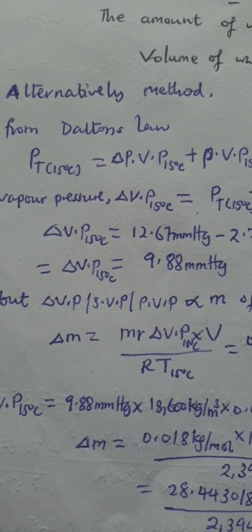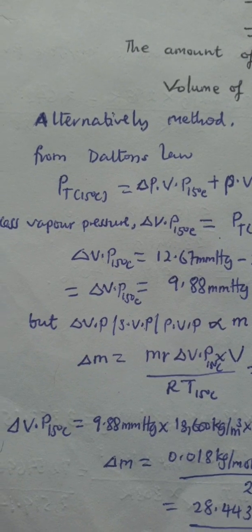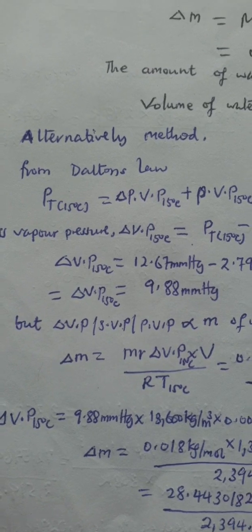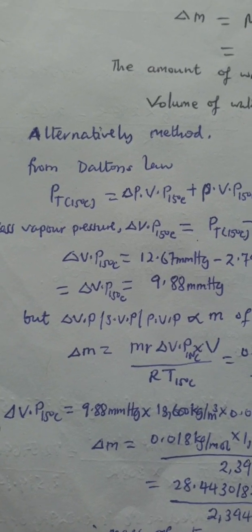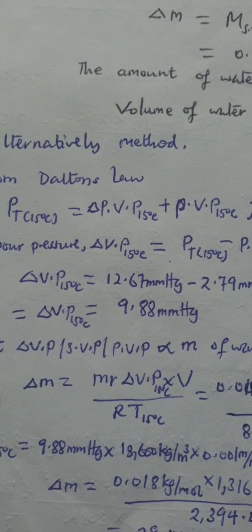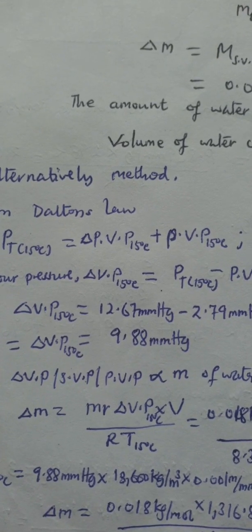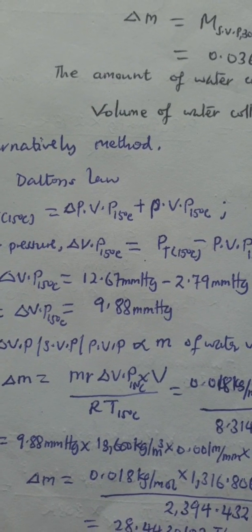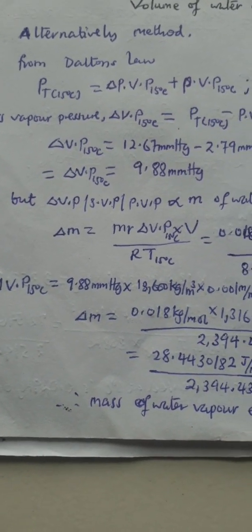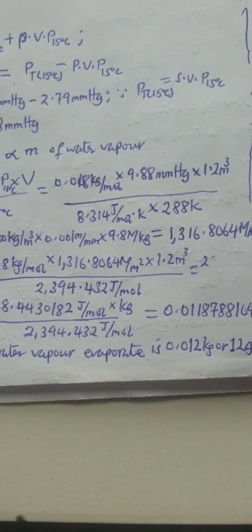Now we want to apply the alternative method using Dalton's law. The total partial pressure at 15 degrees Celsius equals the sum of individual pressures: the excess vapor pressure that evaporates until saturation plus the vapor pressure present before the beaker was placed inside at the same temperature. Our answer for excess mass is equivalent to the result from the first method.